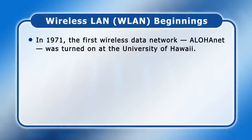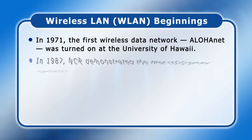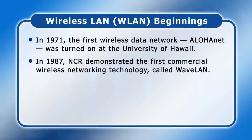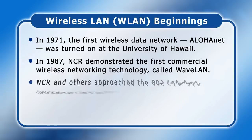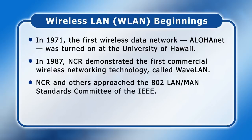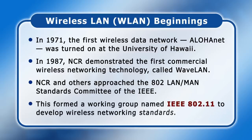In 1971, the first wireless data network, AlohaNet, was turned on at the University of Hawaii. In 1987, NCR demonstrated the first commercial wireless networking technology called WaveLAN, and along with others saw the benefit of establishing a standard. To this end, they approached the 802 LAN/MAN Standards Committee of the Institute of Electrical and Electronic Engineers, or IEEE, which formed a working group named IEEE 802.11 to develop wireless networking standards.